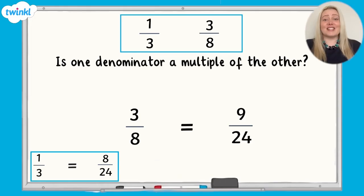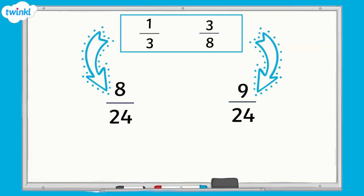Both fractions now have a common denominator, which means that we can use the numerators to order and compare. We would say that 8 24ths is less than 9 24ths, so we would use our less than symbol here. Therefore, 1 third is less than 3 eighths.